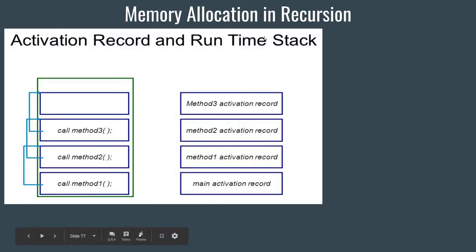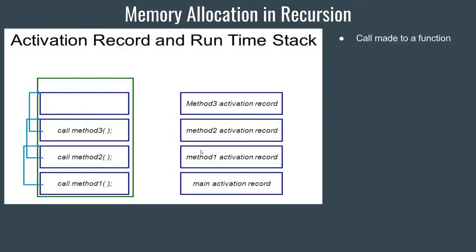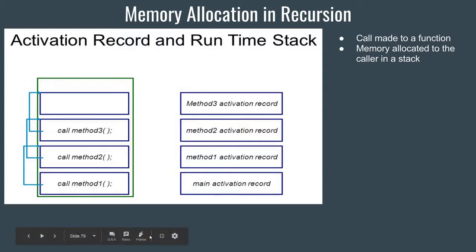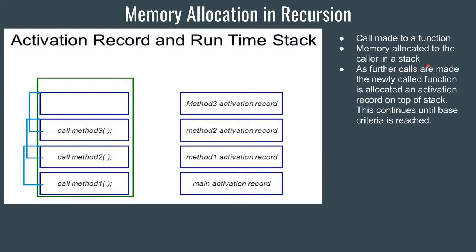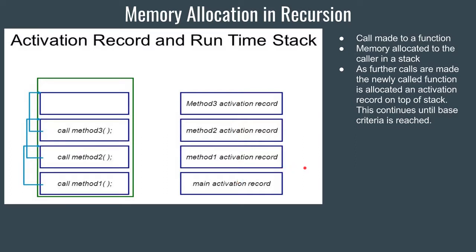This is how memory is allocated even in recursion. Basically, this is the runtime stack which the compiler provides to your recursive program. There are a few steps: first, a call is made to a function; next, memory is allocated to the caller in the stack as an activation record; and as further calls are made, the newly called function is allocated an activation record on top of the stack.